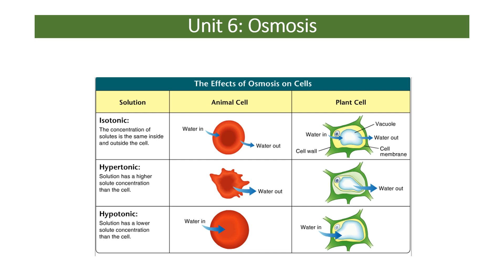Isotonic — mainly higher tier — is when the concentration, say of sugars, inside the cell is the same as the solution outside the cell. Some water moves in and some moves out, but there is no net change in mass in the cell. The same concentration inside and outside means water doesn't move one way or the other overall.